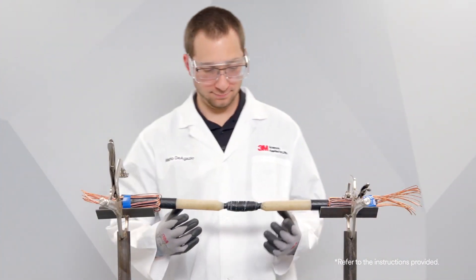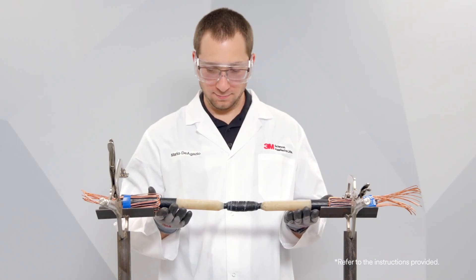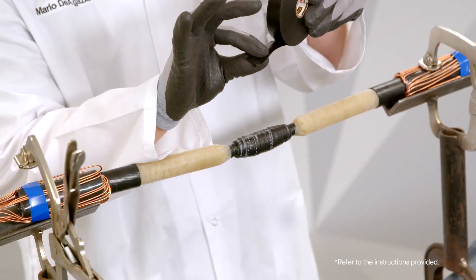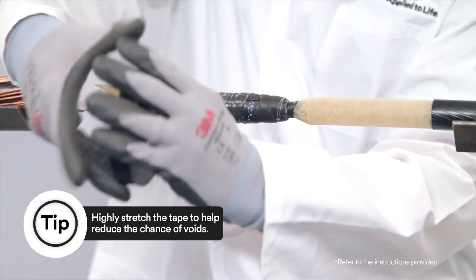Prepare cable as per standard practice. Apply Scotch Linerless Rubber Splicing Tape 130C tacky side up using highly stretched half-lap layers.